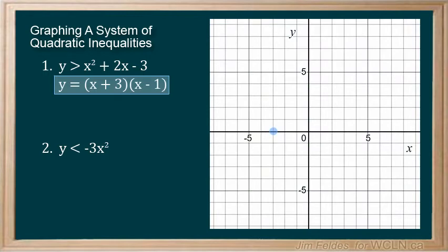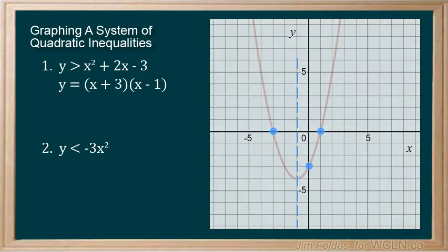The roots are negative 3 and 1 when y is 0. A line of symmetry can be placed at the midpoint between the roots to help us identify the vertex point. And we know when x is 0, the y-intercept is negative 3. This is enough to draw our graph.